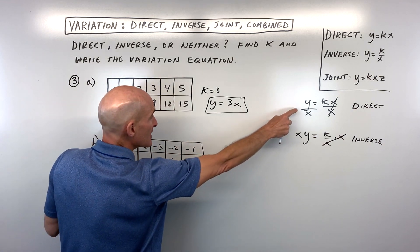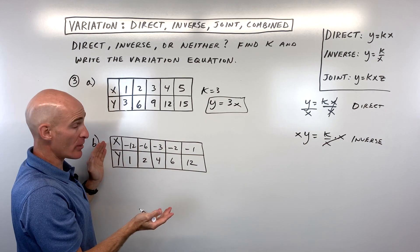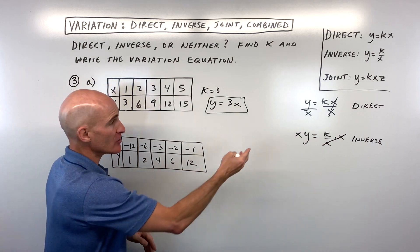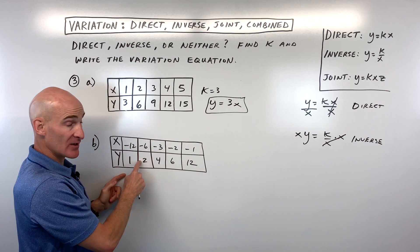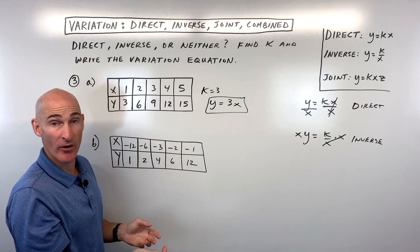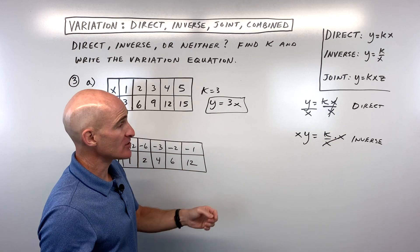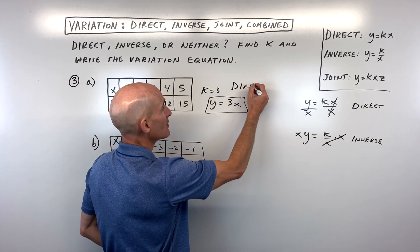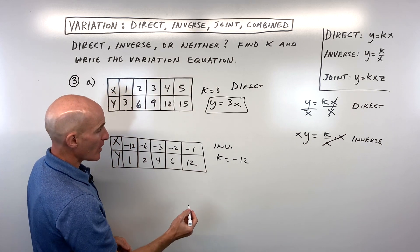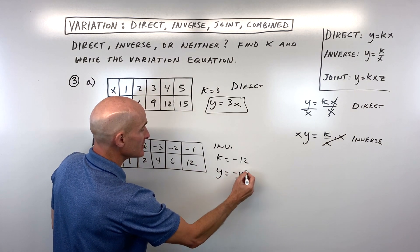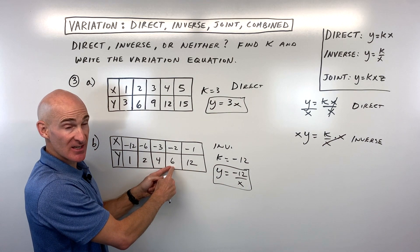For table B, y divided by x gives negative 1/12, then negative 1/3 — not the same, so it's not direct. Trying x times y: negative 12 times 1 is negative 12, negative 6 times 2 is negative 12, and so on — all give negative 12. Since multiplying x and y gives the same constant, this is an inverse variation equation with k equal to negative 12. The equation is y equals negative 12 divided by x. Checking with x equals negative 2: negative 12 divided by negative 2 equals 6, which matches.